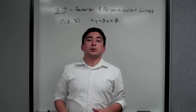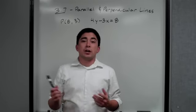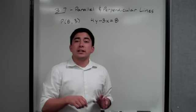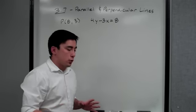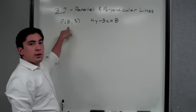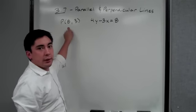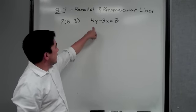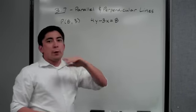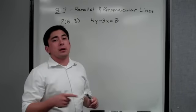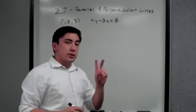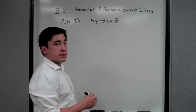So Algebra 2, the example we are starting off with for section 3.7 says: write an equation in standard form for a line that contains a point and is parallel to the line whose equation is 4y minus 3x equals 8. In order to do that, you need to understand what parallel means. To know that two lines are parallel, their slopes must be the same.